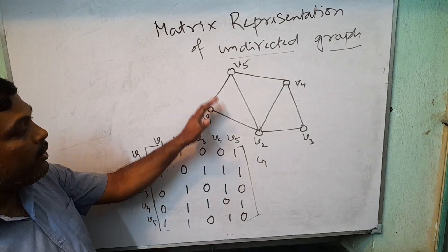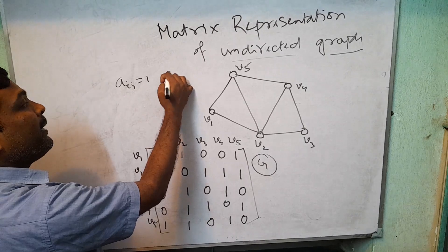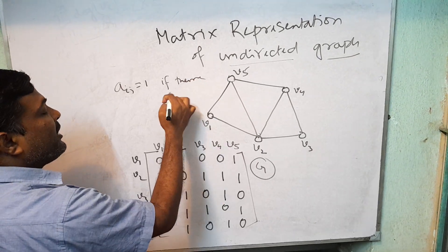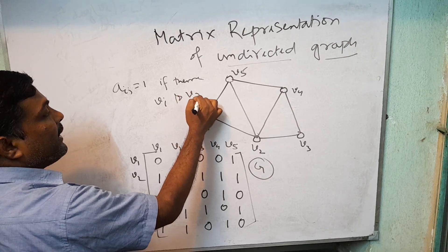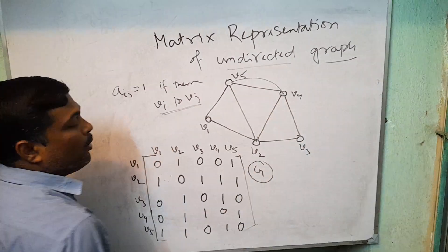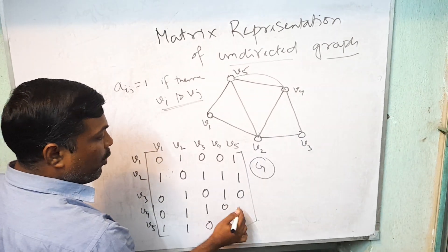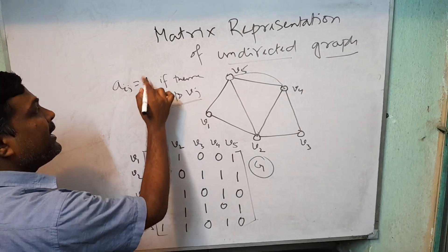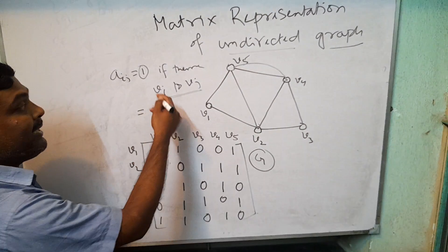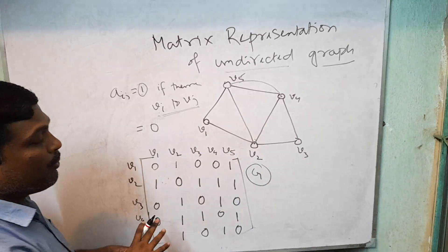So this is the adjacency matrix corresponding to this graph G. The elements: Aij equals 1 if there exist at least 1 edge between Vi and Vj. For example, suppose V4 to V5 has two parallel edges — do not write 2 here, just write 1. If there exist at least 1 edge between Vi and Vj, it is 1; otherwise it is 0. So the adjacency matrix is actually a binary matrix.